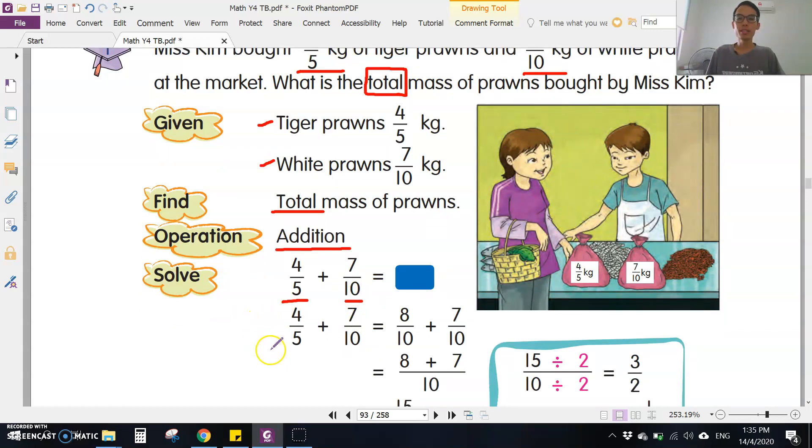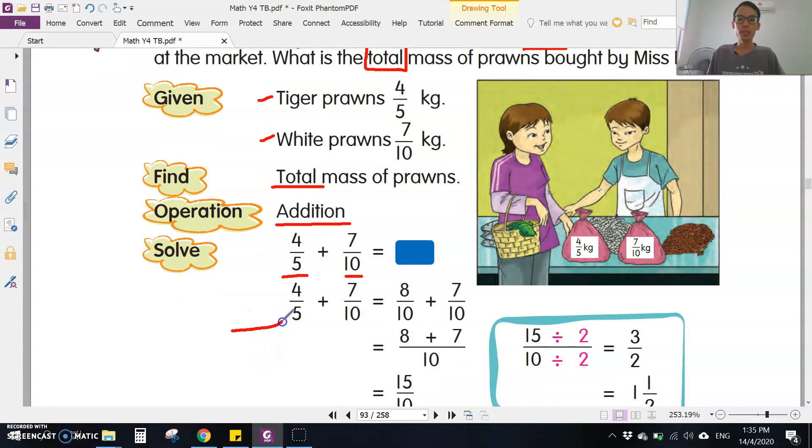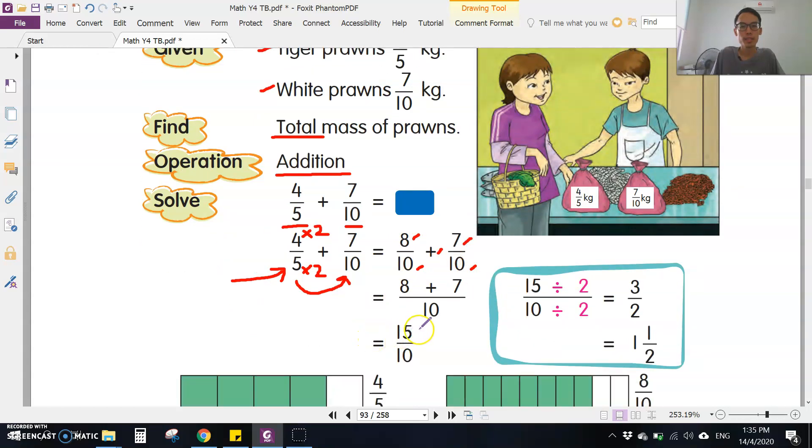Step one: change the denominator, make them the same first. Samakan nombor bawah. The smaller number can follow the larger number, so 5 times 2. The bottom times 2, the top also times 2. Five times 2 is 10, four times 2 is 8. Now the denominators are the same. Add: 8 plus 7 is 15, bottom remains 10.